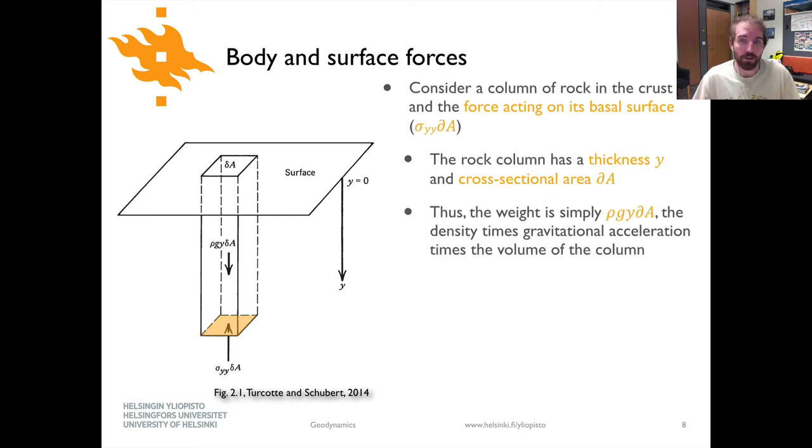If we assume that the column of rock has some nominal thickness y and a cross-sectional area of delta a, in that case all we're saying is that this is a very small area, indicated by delta a, we can calculate what the weight of the column is, and it's simply going to be rho g y times delta a. So we know that the rho g y, that's our normal way of calculating the mass of some piece of rock, its density times gravity times the thickness will give us that, and then the delta a in this case comes in because the mass of this rock is being acted upon by body forces, but being supported at its base along a surface, and that surface has an area of delta a. So that's where this delta a comes in here.